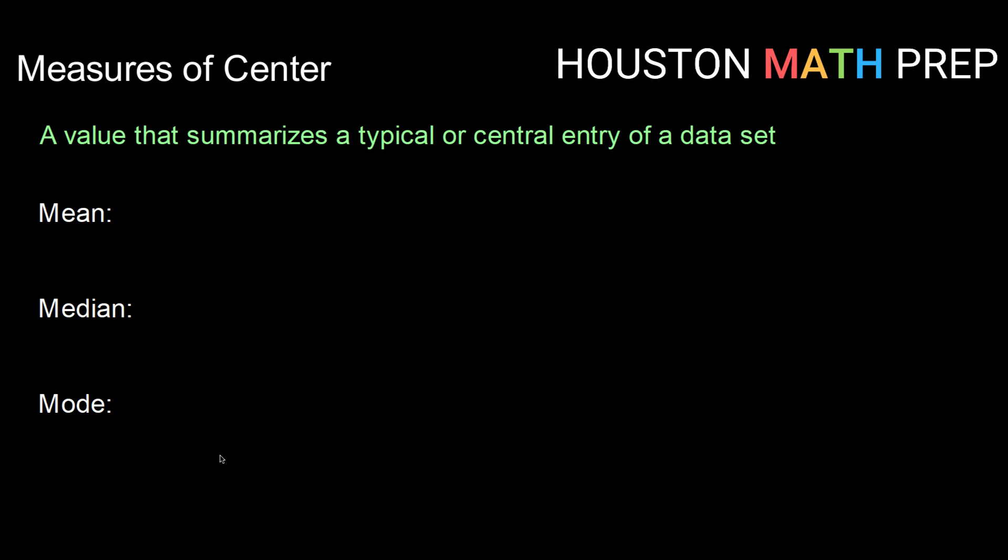A measure of center is a value that summarizes what we would call a typical or a central entry of a particular data set. We can find these measures of center whether we have a population data set or a sample data set.